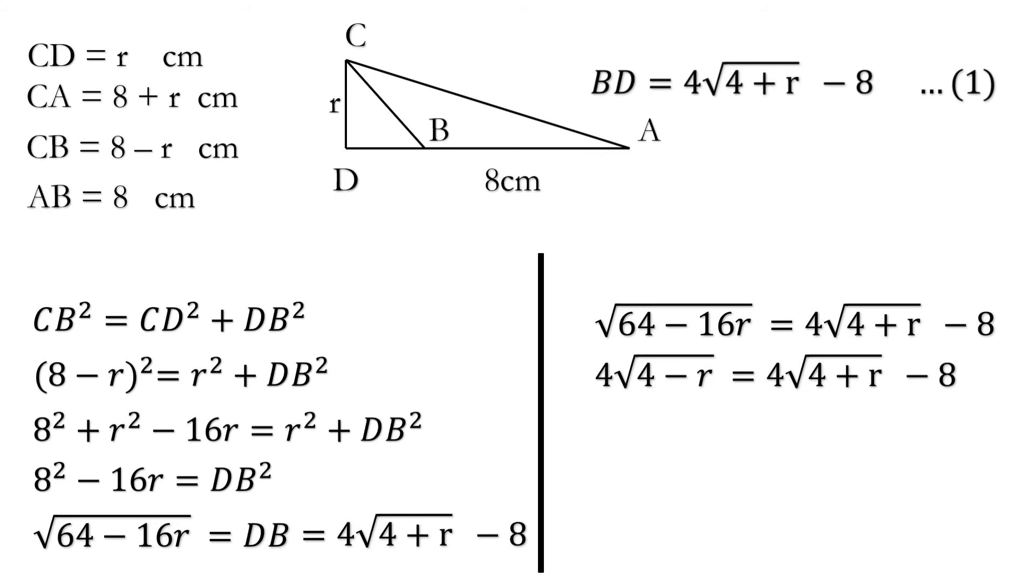Now taking 16 as common and taking its square root we get 4 root 4 minus R is equal to 4 root 4 plus R minus 8.